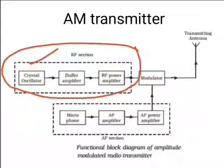The next block is the buffer amplifier. This block is used for impedance matching between the master oscillator and the power amplifier stages. In the absence of this stage, it may cause frequency distortion.